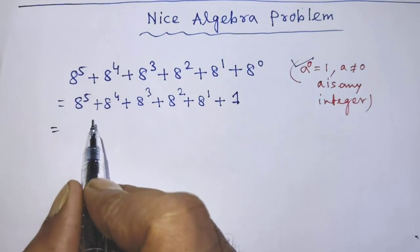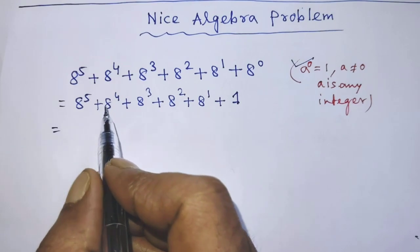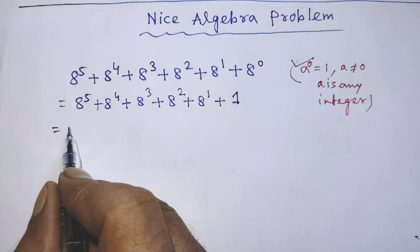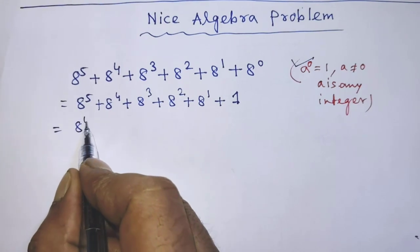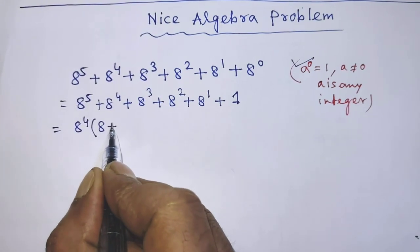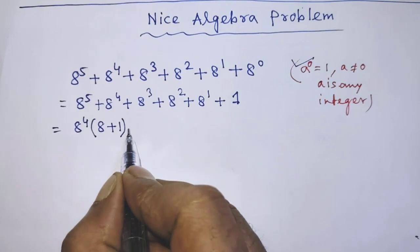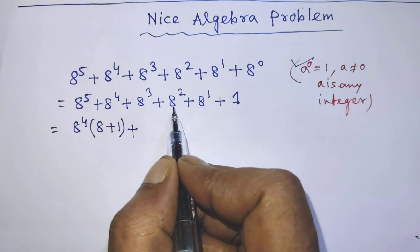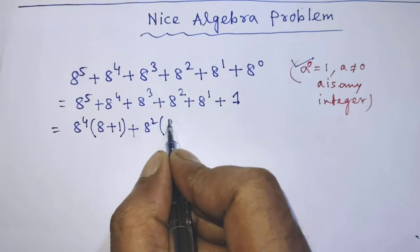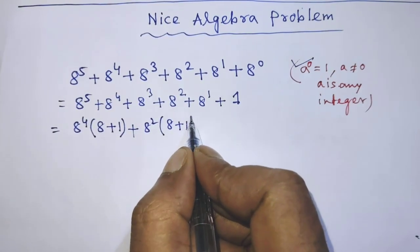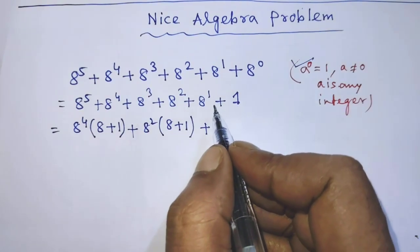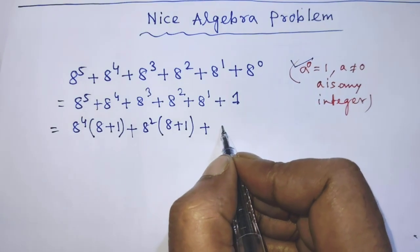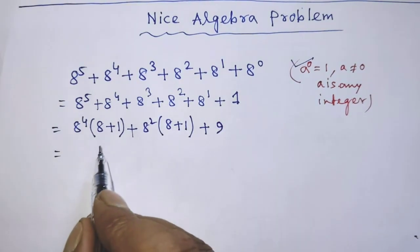The common factor of the first two terms is 8 to the power 4, so we can write from the first two terms: 8 to the power 4 times (8 plus 1). Similarly, we can write from the next two terms: 8 to the power 2 times (8 plus 1). And from the last two terms we get 9.